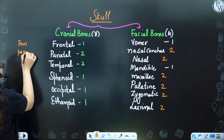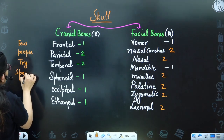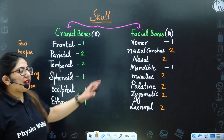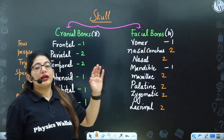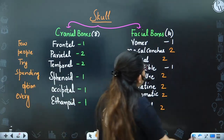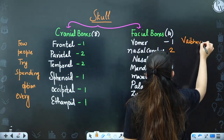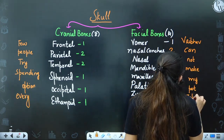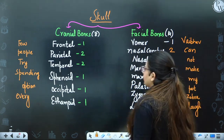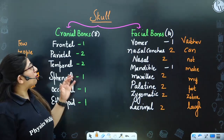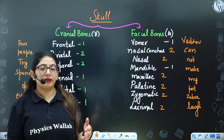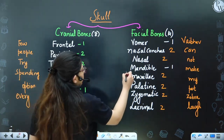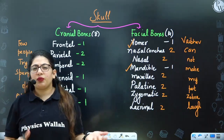The 8 cranial bones are: frontal, parietal, temporal, sphenoid, occipital, and ethmoid — remember with the mnemonic 'Few People Try Spending Every Option.' Most cranial bones are single; parietal and temporal are paired (double). The 14 facial bones include: vomer, nasal, conchae, mandible, maxillary, palatine, zygomatic, and lacrimal — remember with 'Vaibhav Cannot Not Make My Pet Zebra Laugh.' Most facial bones are paired; vomer and mandible are single.